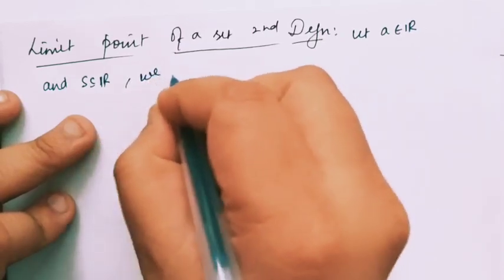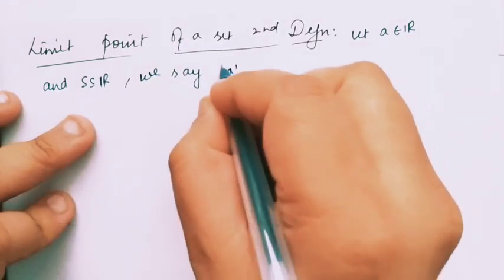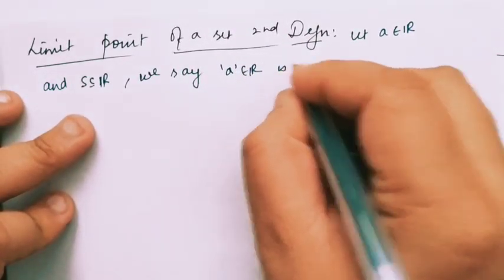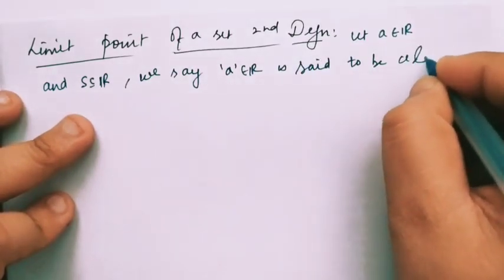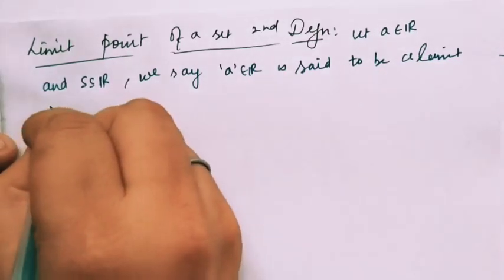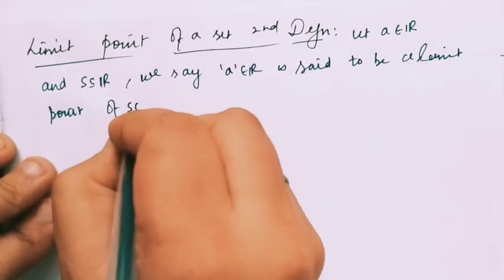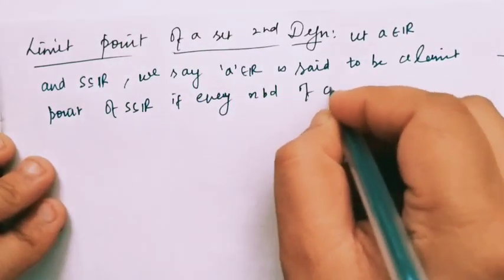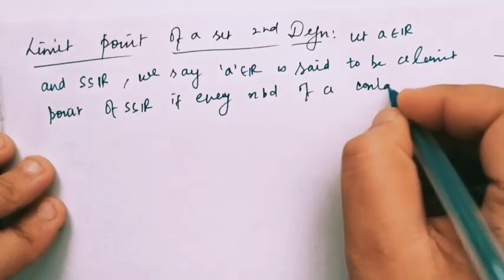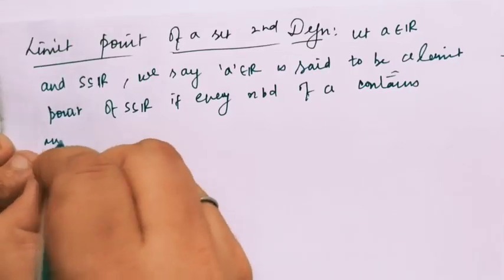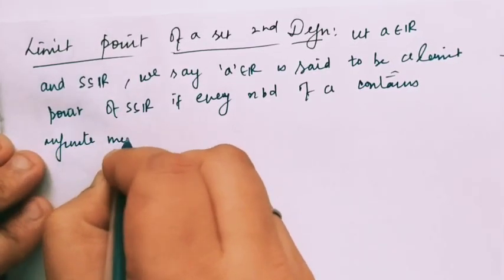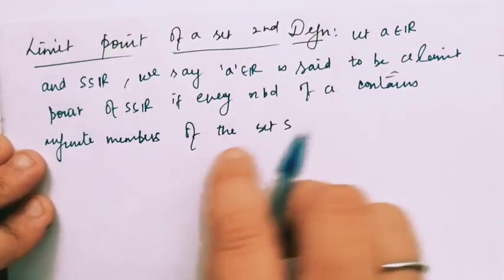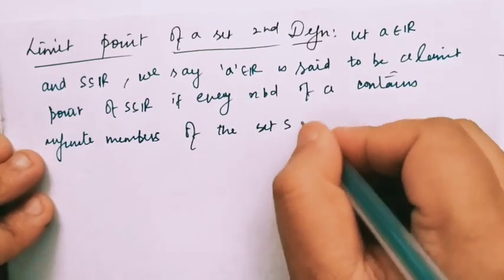We say a point A, which is a real number belonging to R, is said to be a limit point of S — a subset of R — if every neighborhood of the point A contains infinite members of the set S.